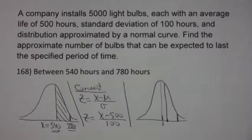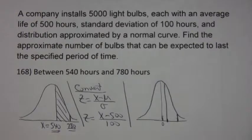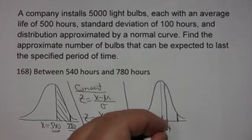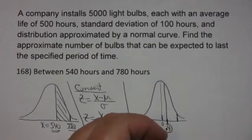How do you convert them? You subtract the mean and divide by the standard deviation. You can probably do this in your head. If you take 540 and subtract 500, you get 40. And if you divide it by 100, 40 divided by 100 is 0.4. So that little value right there is 0.4.